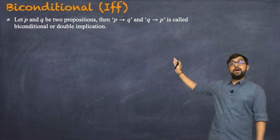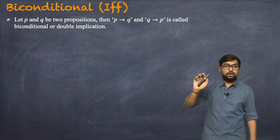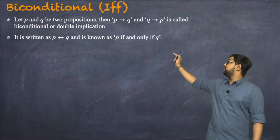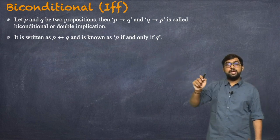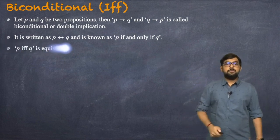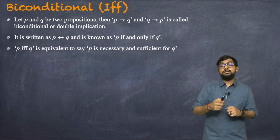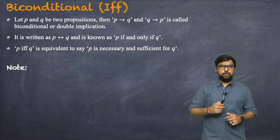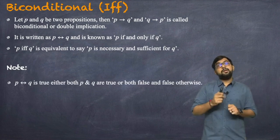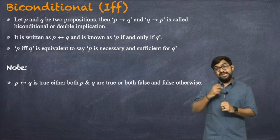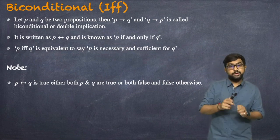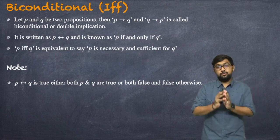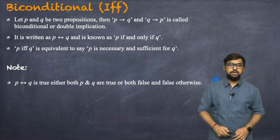The biconditional, meaning 'if and only if,' is written as P ↔ Q, which means P implies Q and Q implies P — a double implication. P if and only if Q is equivalent to 'P is necessary and sufficient for Q.' P ↔ Q is true when both P and Q are true or both are false, and false otherwise.